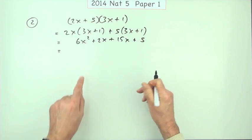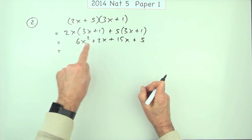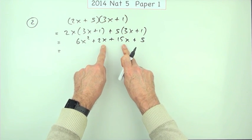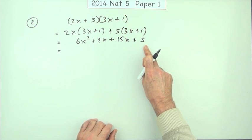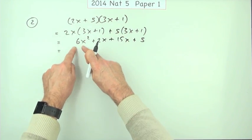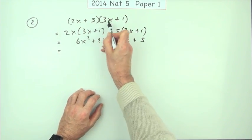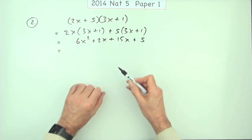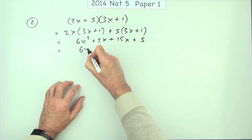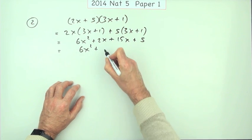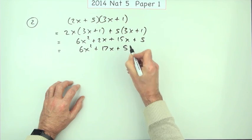The four multiplications produce three types of terms: an x squared term, x terms, and a number term. And those two are really obvious. The first times the first makes the x squared, and the last times the last makes the number. Because the other two multiplications are mixtures, those are the ones in the middle. So then you would get 6x squared, 2 and 15 is 17x, plus 5.